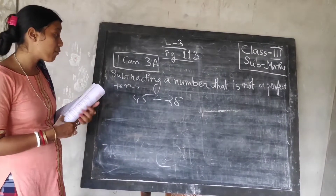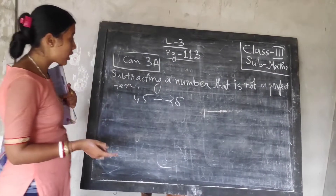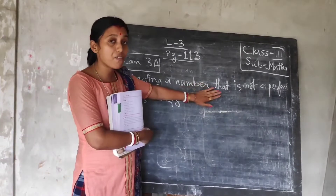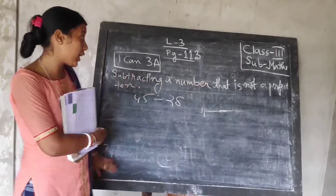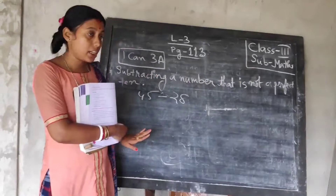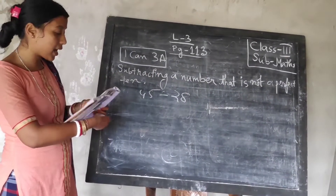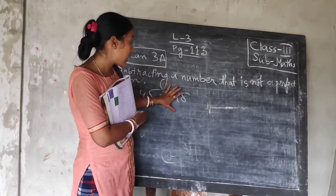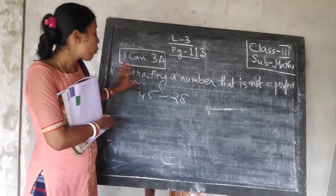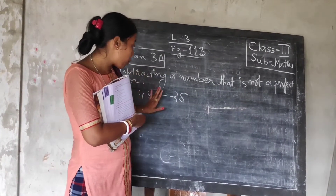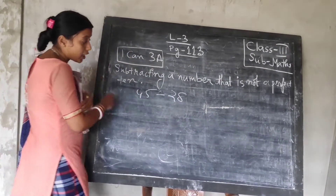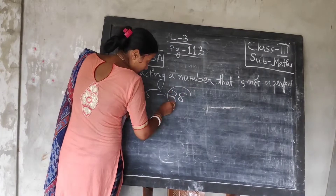We will start now question number 4. To start question number 4, you have to know how to make a perfect 10. This is subtracting a number that is not a perfect 10. When your question is given that you have to subtract a number that is not a perfect 10, how will you do it? We have to know first how to make a number into a perfect 10. Here, you have to take this number.